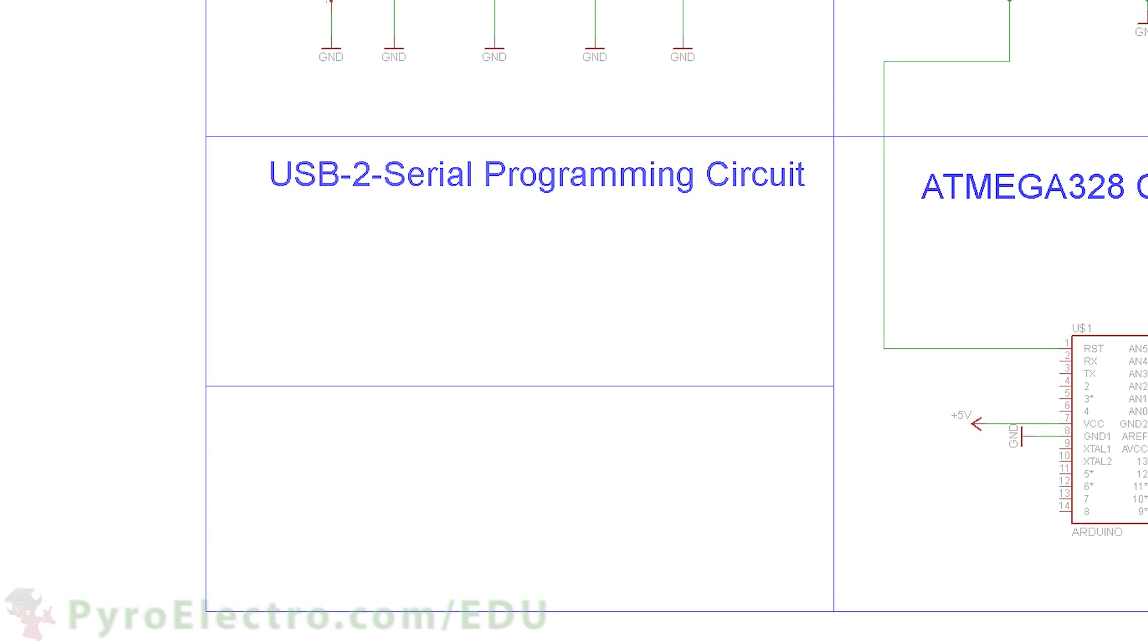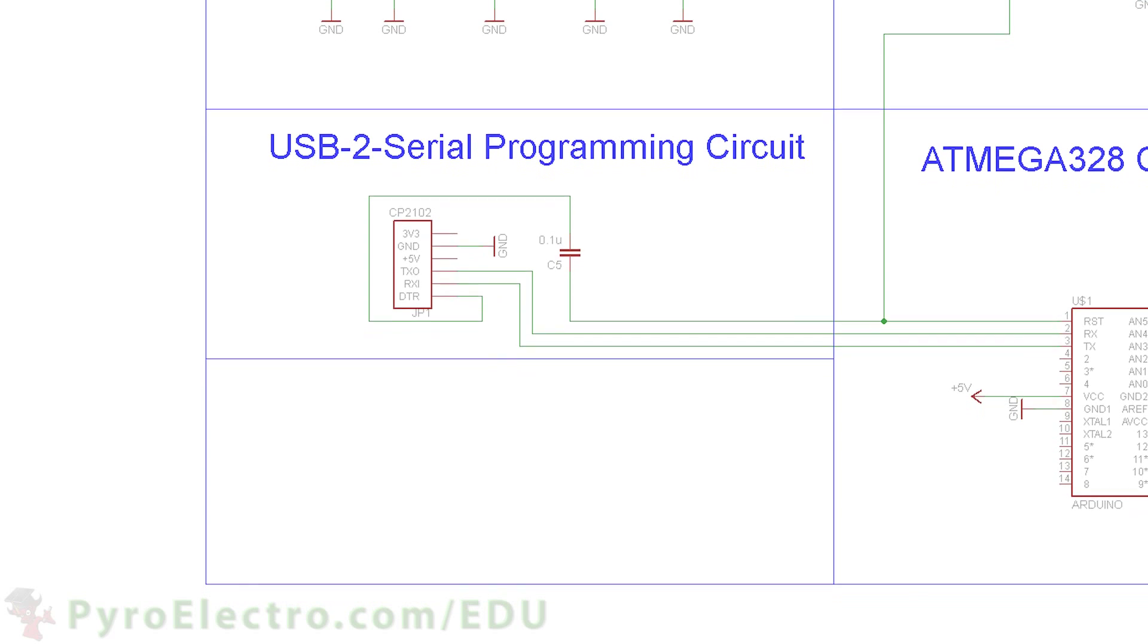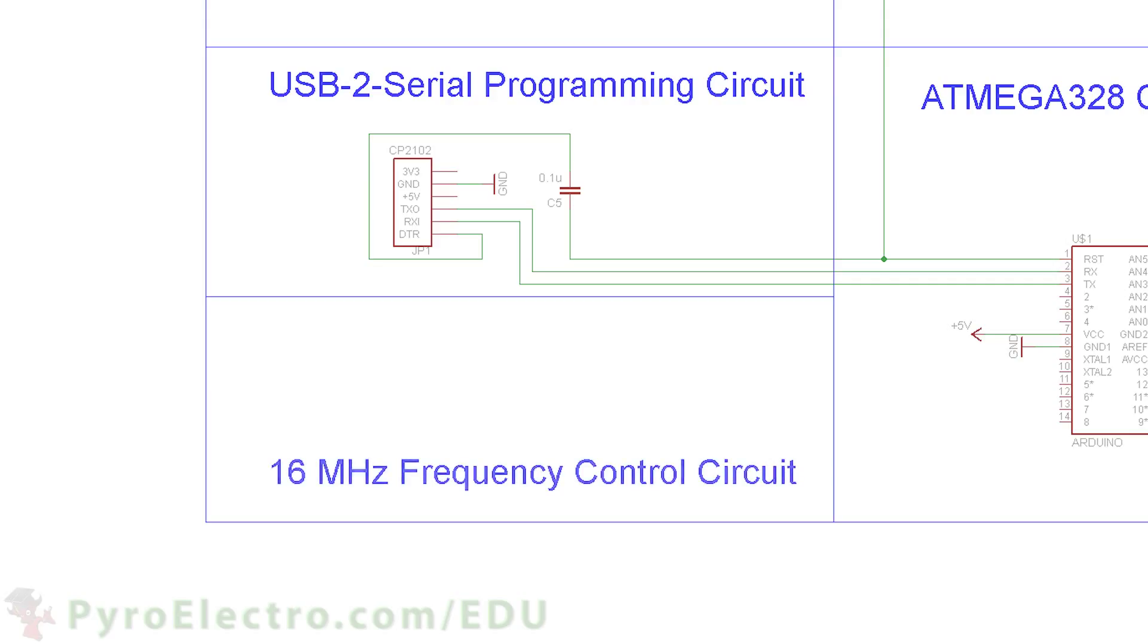The USB to serial programming circuit connects TX to RX and RX to TX of the microcontroller. Then ground to ground, and finally DTR connects to a 0.1uF capacitor which connects to pin 1 of the microcontroller.